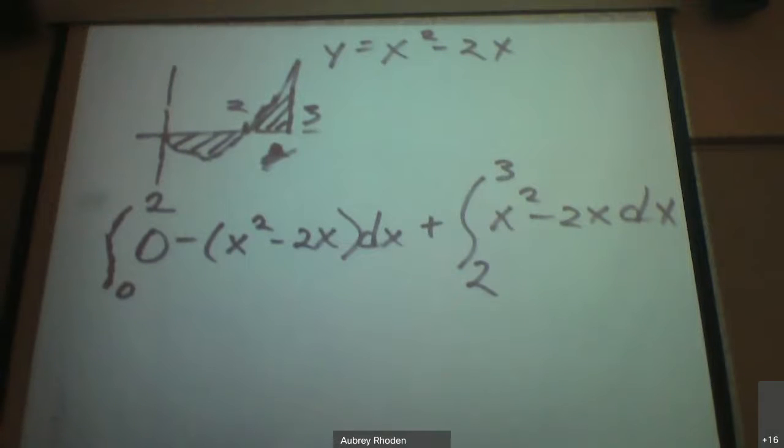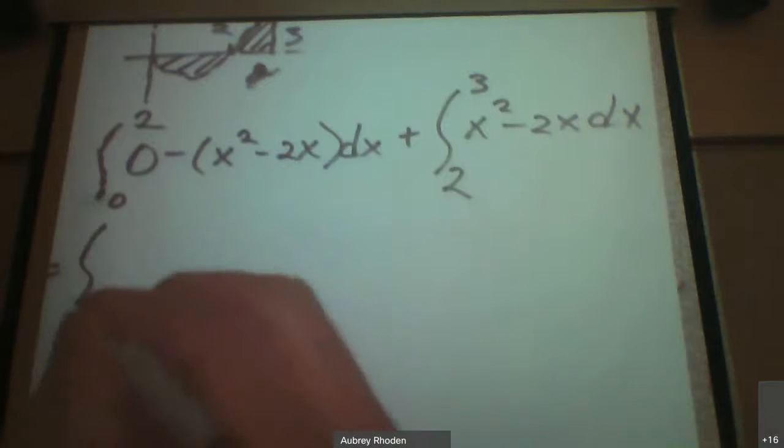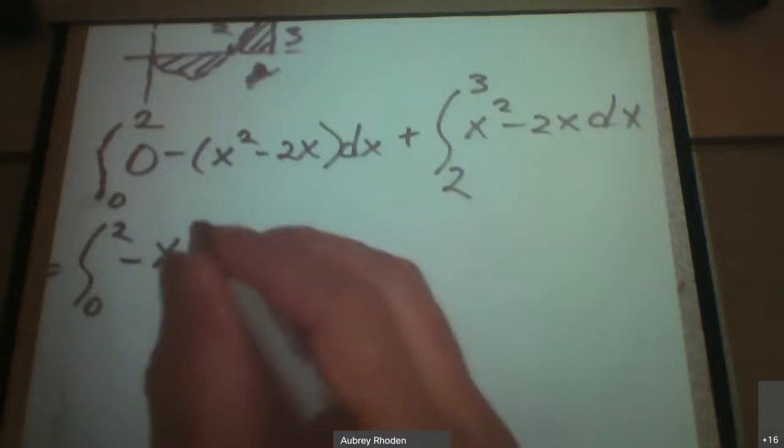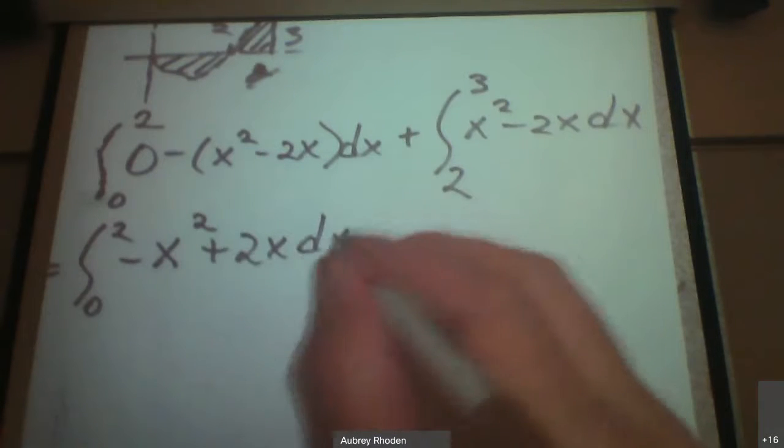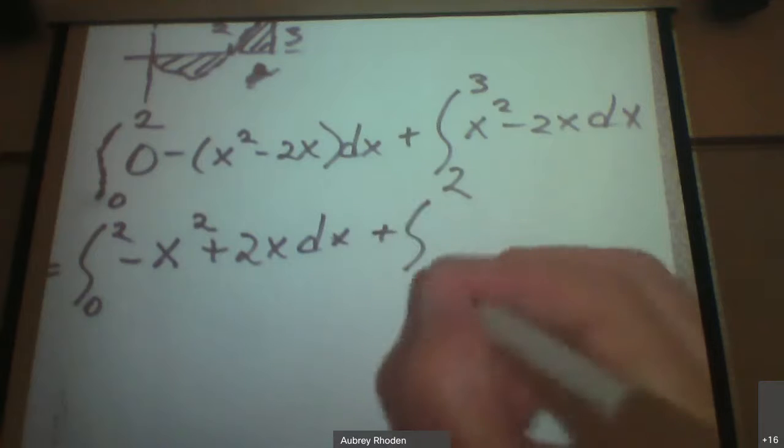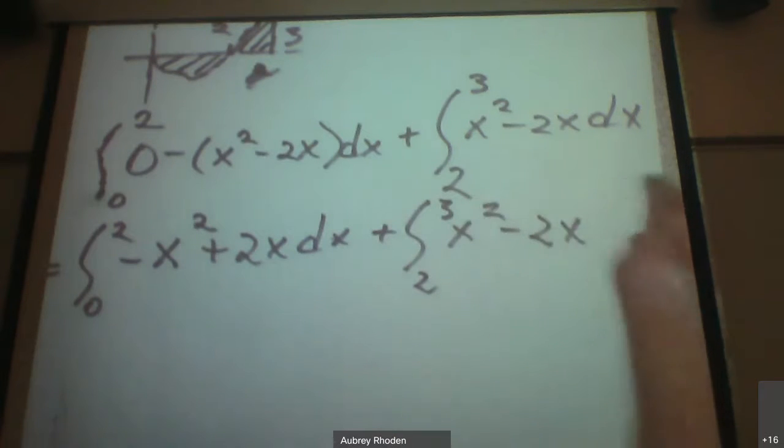So the first thing that we're going to do is say, well, this is going to be the integral from 0 to 2. Let's just simplify this a little bit. That's going to be negative x squared and then plus 2x dx, and let's just go ahead and we'll leave this one alone, 2 to 3 of x squared minus 2x dx.